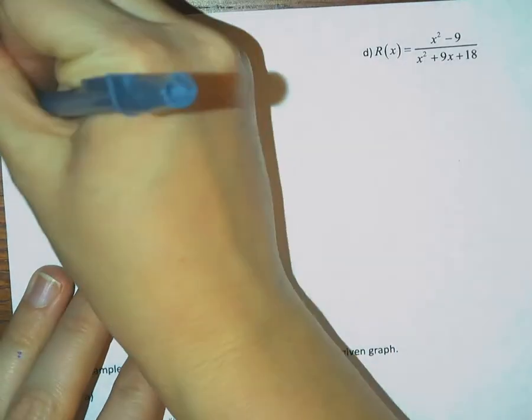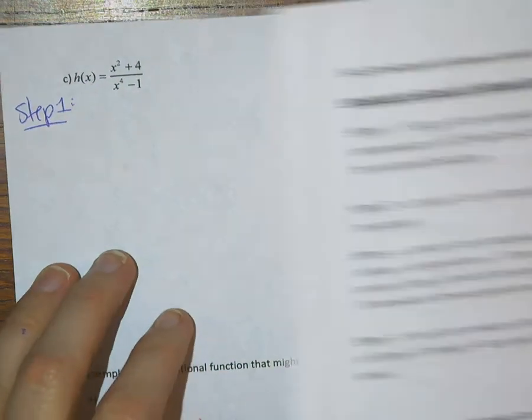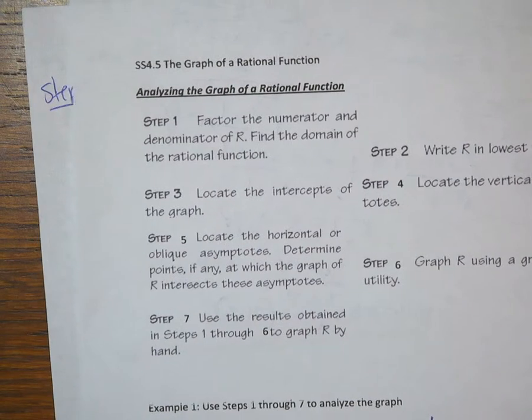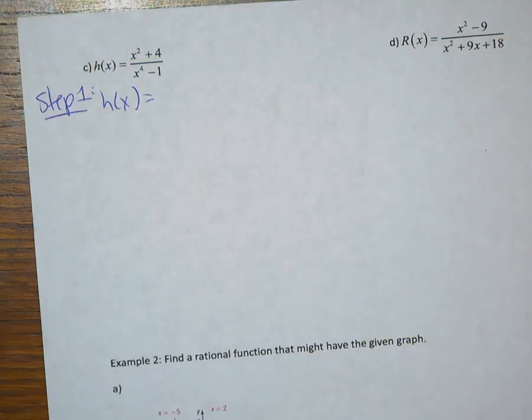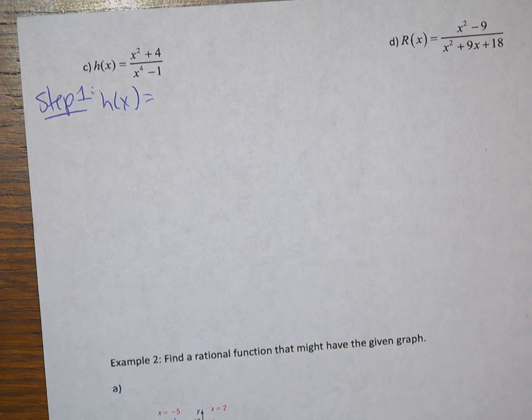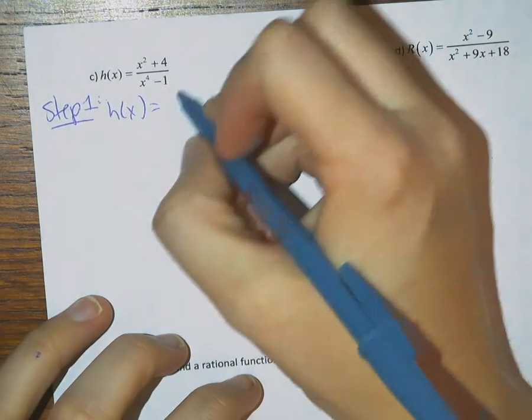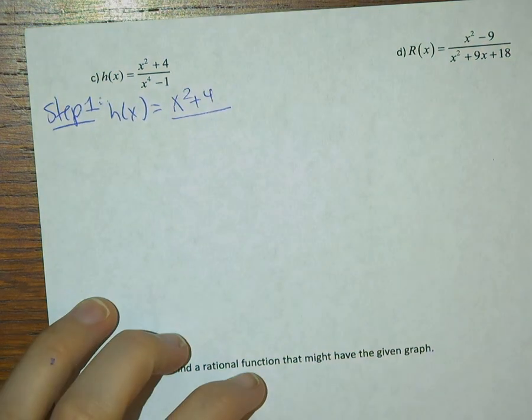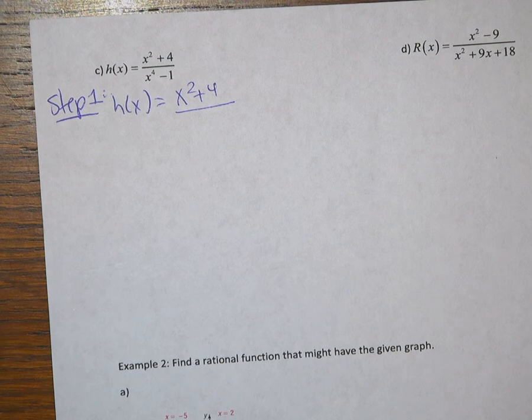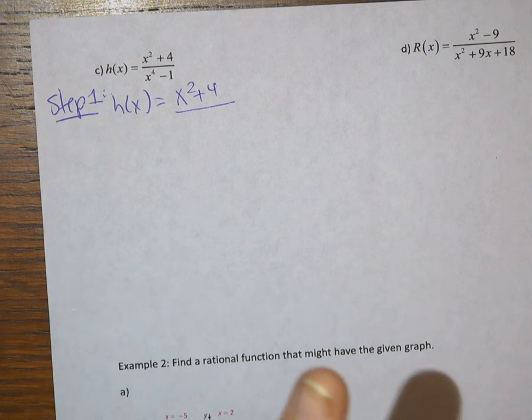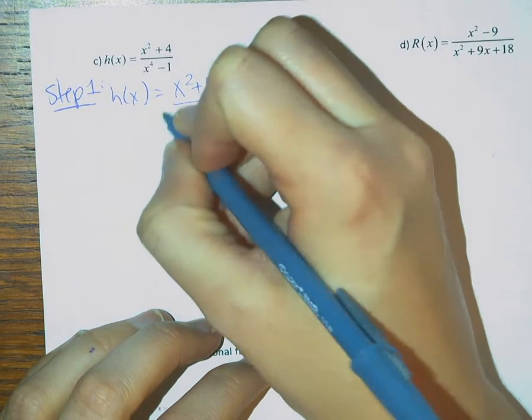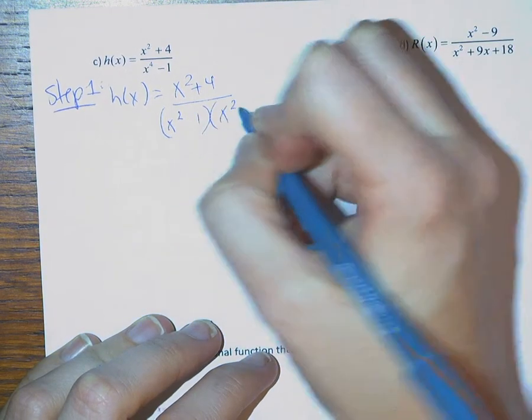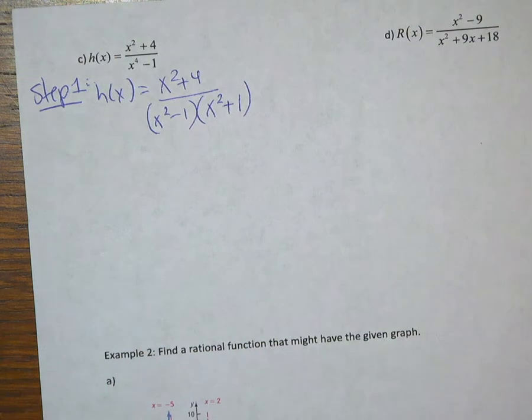Step 1 asks us to factor the numerator and denominator of our rational function. Let's look at this numerator. If we look at this numerator we would see that it is not factorable. x squared plus 4, not happening. So we are going to leave it x squared plus 4. The denominator however is factorable. Now if we consider this as two perfect squares, x to the 4th and 1, we see that this is a difference of squares. The square root of x to the 4th is x squared. The square root of 1 is 1.